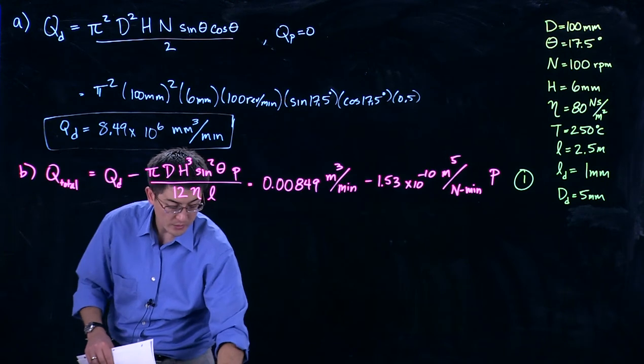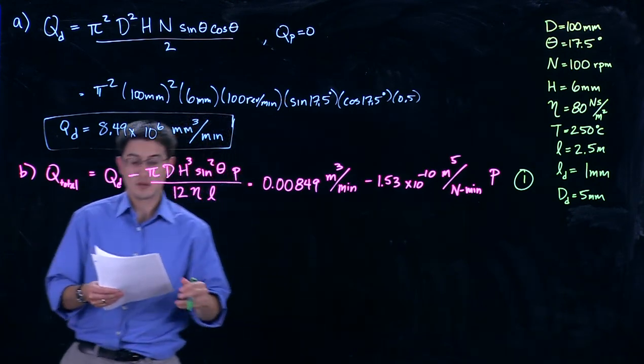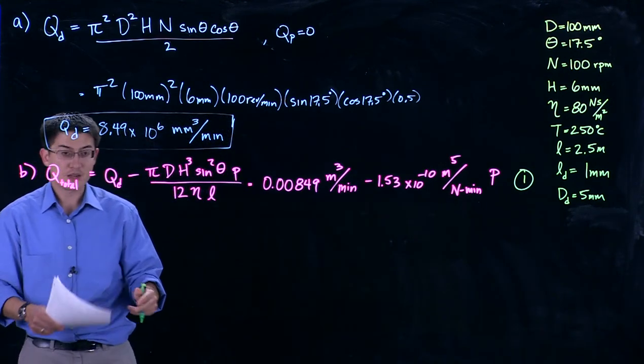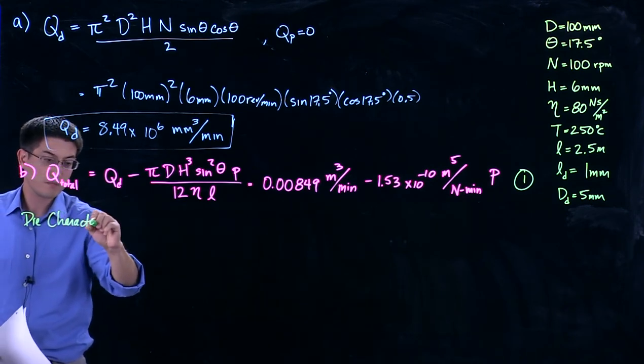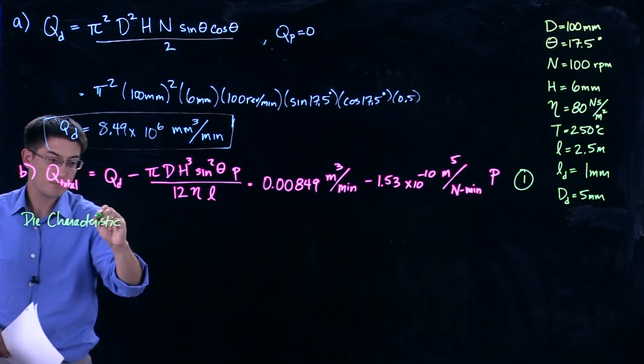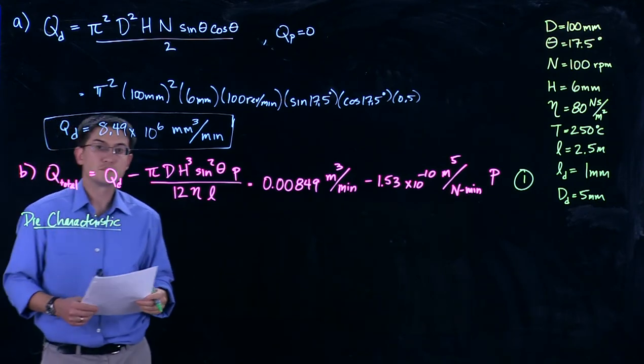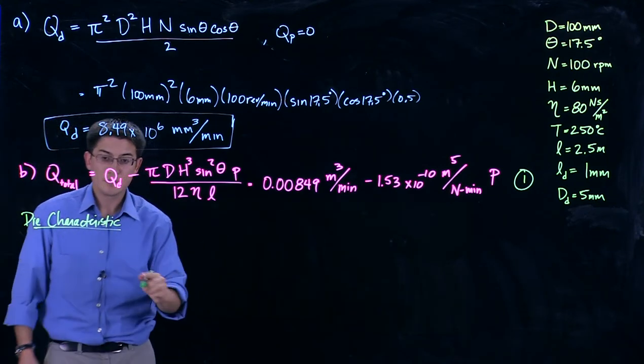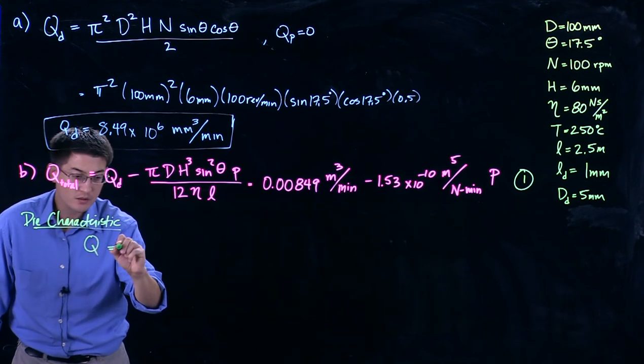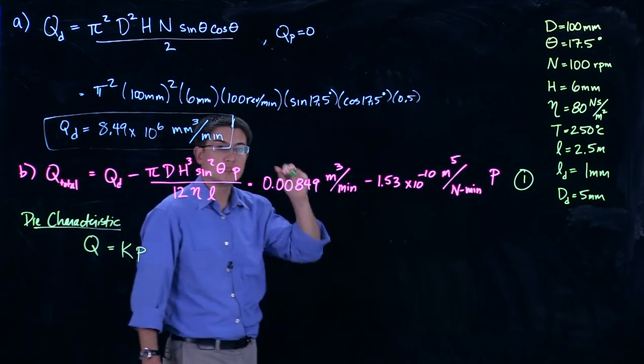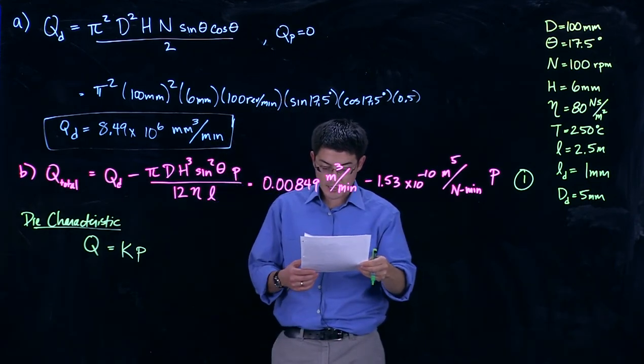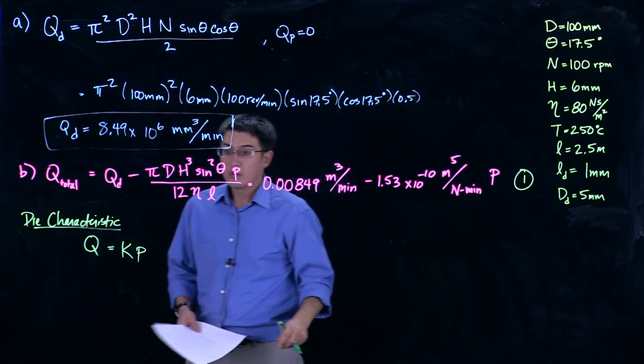Now, the other thing we need to know here we can know is the die characteristic. Die characteristic, and we said we're extruding round solid rod out of our die.